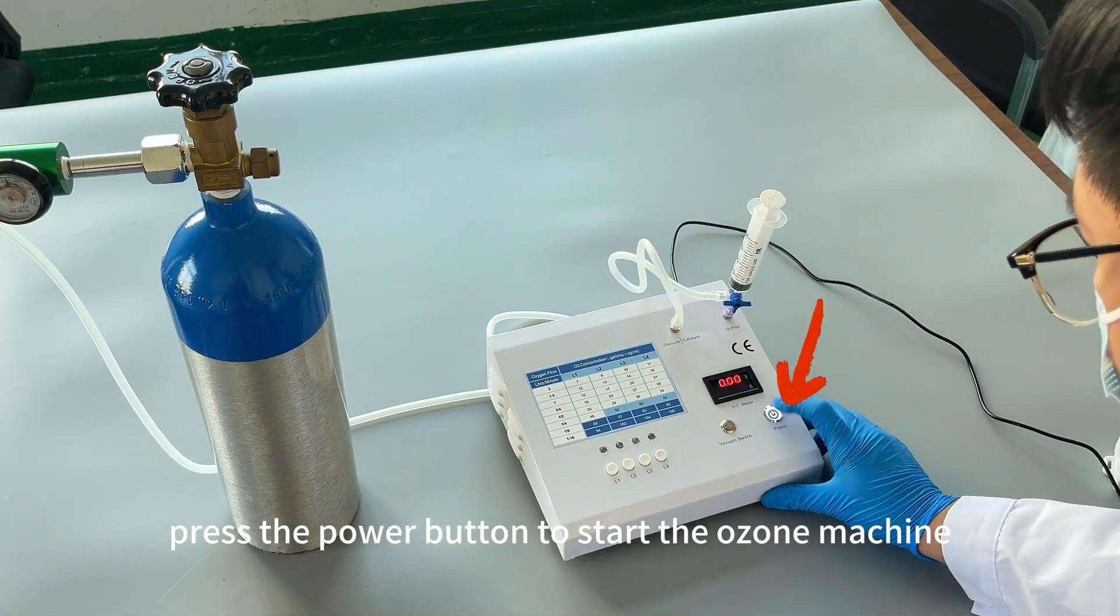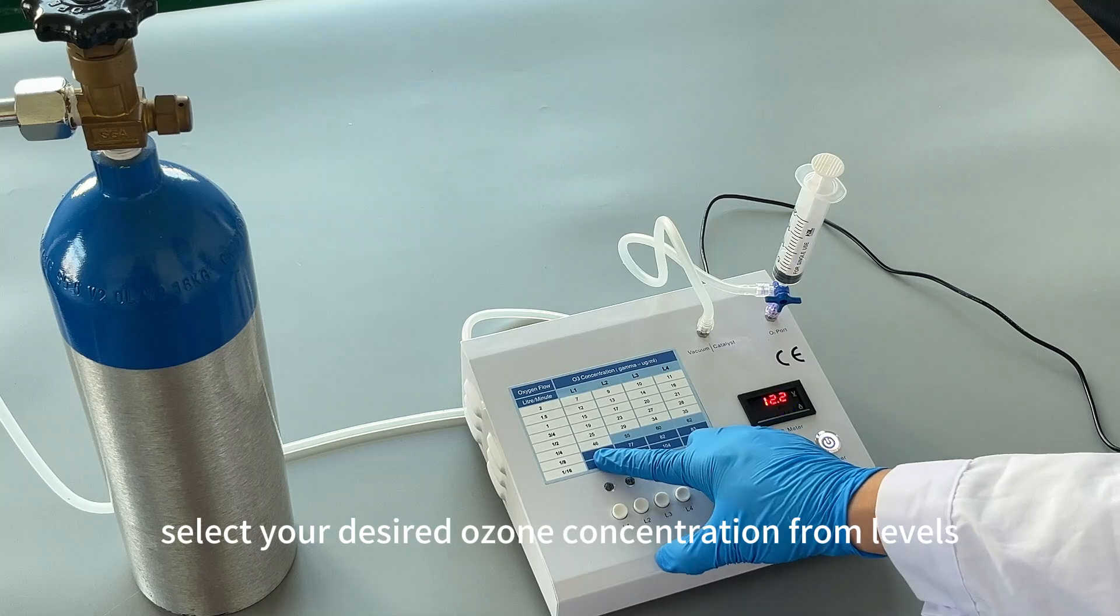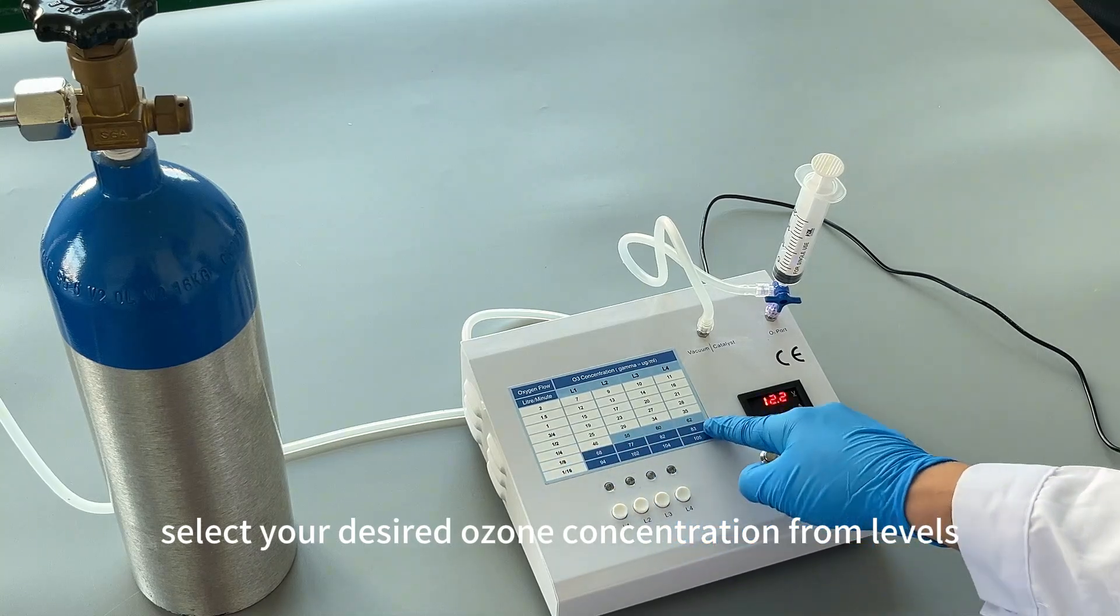Press the power button to start the ozone machine. Select your desired ozone concentration from levels L1 to L4.